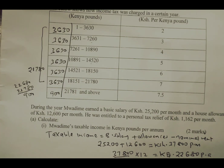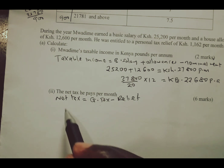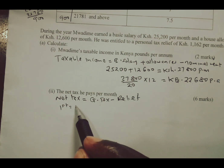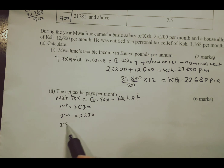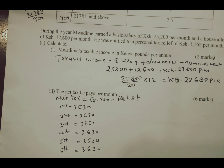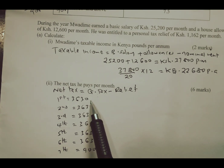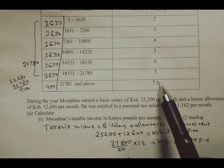We have seven brackets in total. The first bracket has 3,630; the second has 3,630; the third has 3,630; the fourth has 3,630; the fifth has 3,630; the sixth has 3,630; and the seventh bracket has 900, which is the remaining amount. The tax rates are: 2, 3, 4, 5, 6, 7, and 7.5 shillings per 20 shillings respectively.